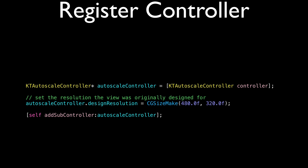Let's look at how this works in code. First you need to create an instance of the KDAutoscaleController, which is done in the usual Cobalt Touch way, and add it as a subcontroller. The only thing you need to do is set the design resolution, which is basically the reference resolution for which you will be designing and positioning your nodes.